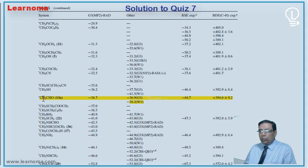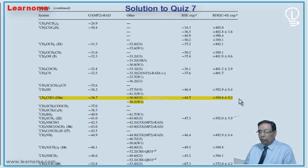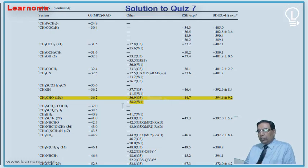Let us see CH3CHO — option B. It clearly says that for this, the bond dissociation energy is 394.6 kJ per mole plus minus 9.2, and the Rad data is minus 36.7. Further, it illustrates this data in a proper diagram also.